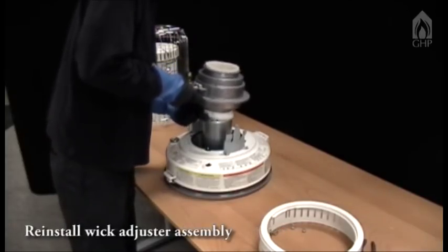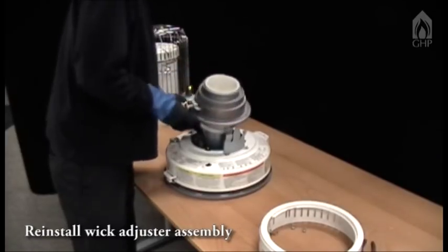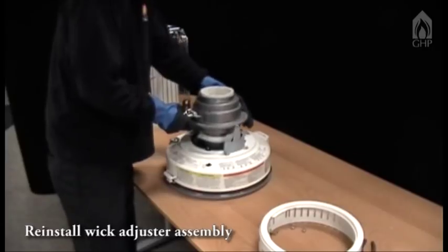Replace the wick assembly on the heater with the wick raised. The wick adjuster knob will need to be positioned between the caution and warning labels.